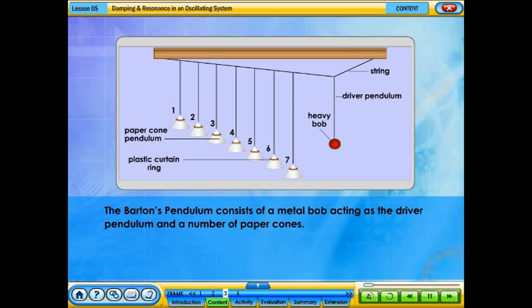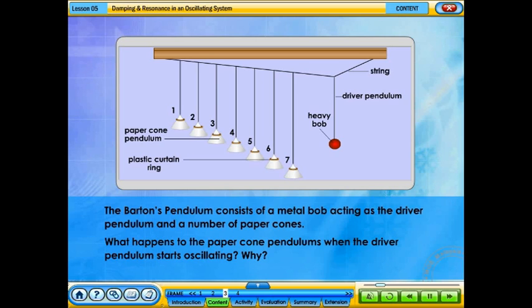The Barton's pendulum consists of a metal bob acting as the driver pendulum and a number of paper cones. What happens to the paper cone pendulums when the driver pendulum starts oscillating? Why? Click on driver pendulum to start oscillation.